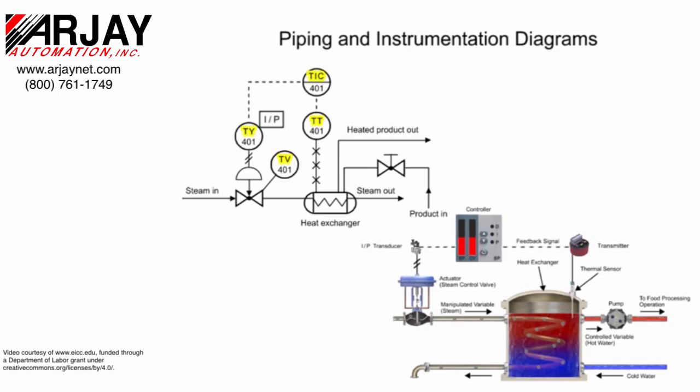In the top portion of the symbols is the functional identifier and the first letter denotes the measured variable. The first letter of each functional identifier is the letter T, which defines the process of temperature control.